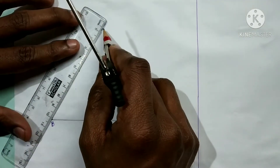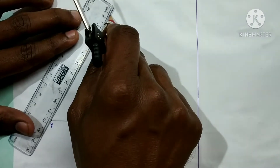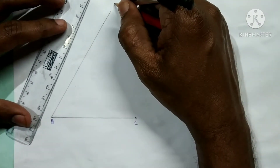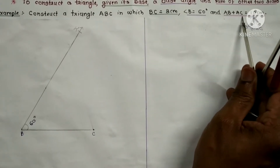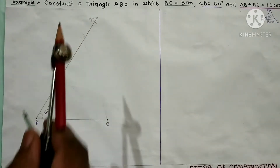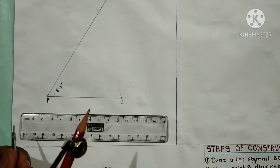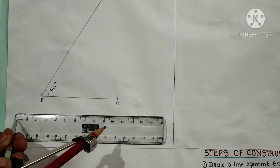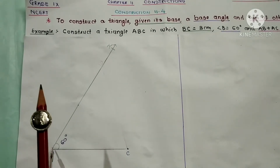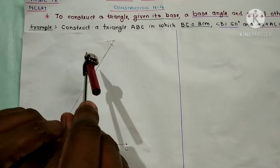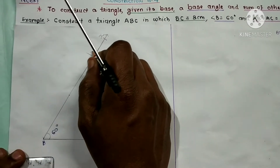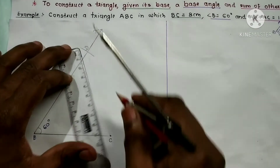From point B we have to draw one ray. We have to cut a distance of AB plus AC equal to 10 cm, so this distance we have to take from B — that is 10 cm. Using a scale, this is point 0 and this is 10, so I have taken 10 cm distance from point B. We cut this distance and give the name point D.